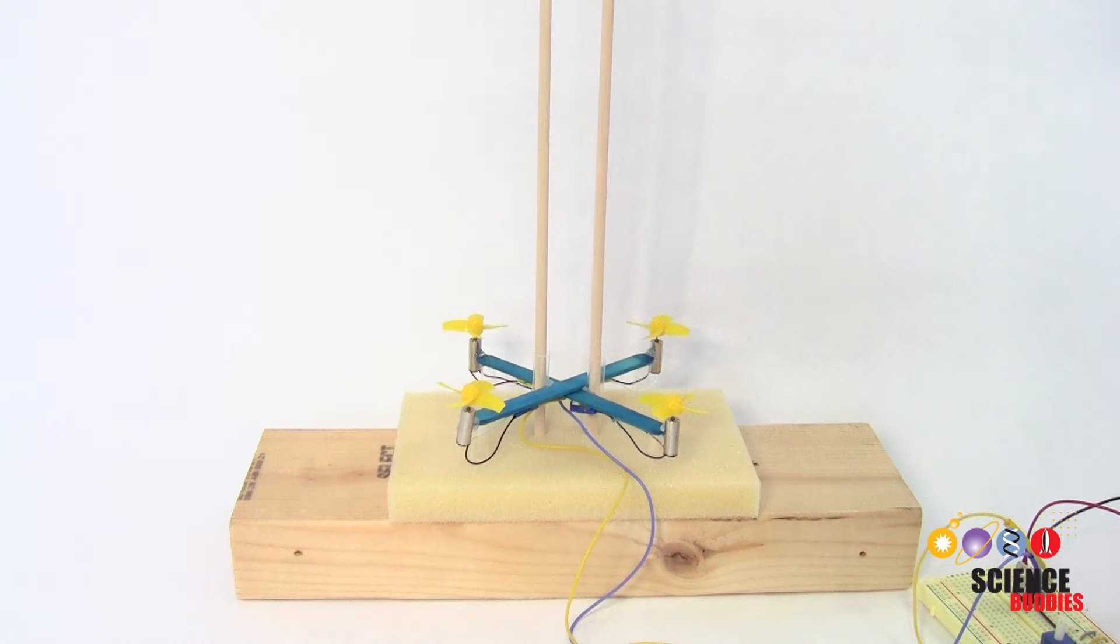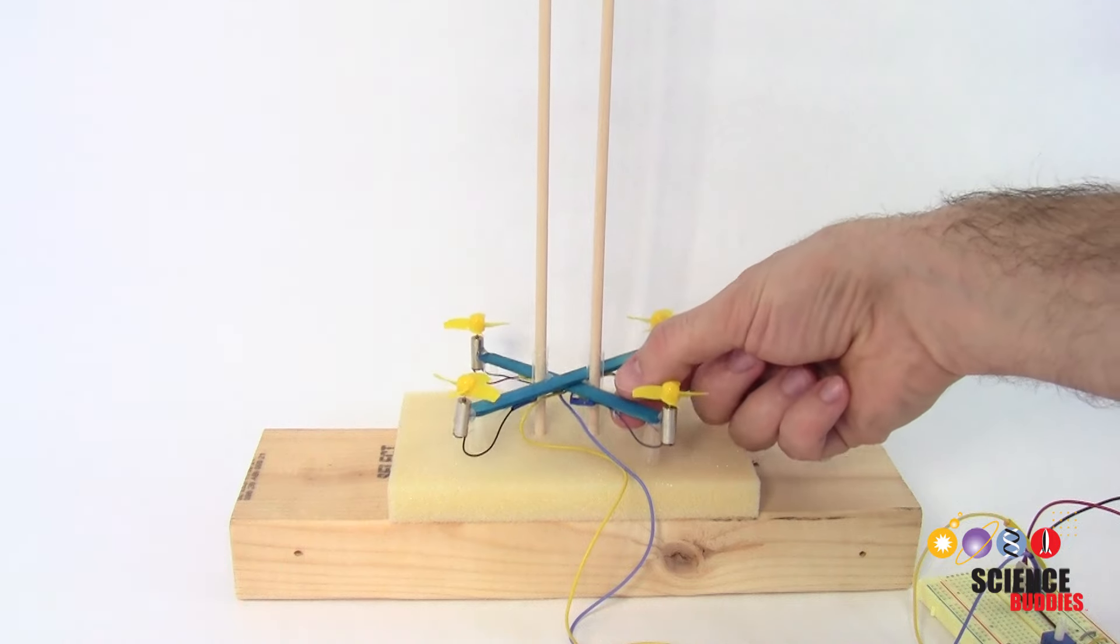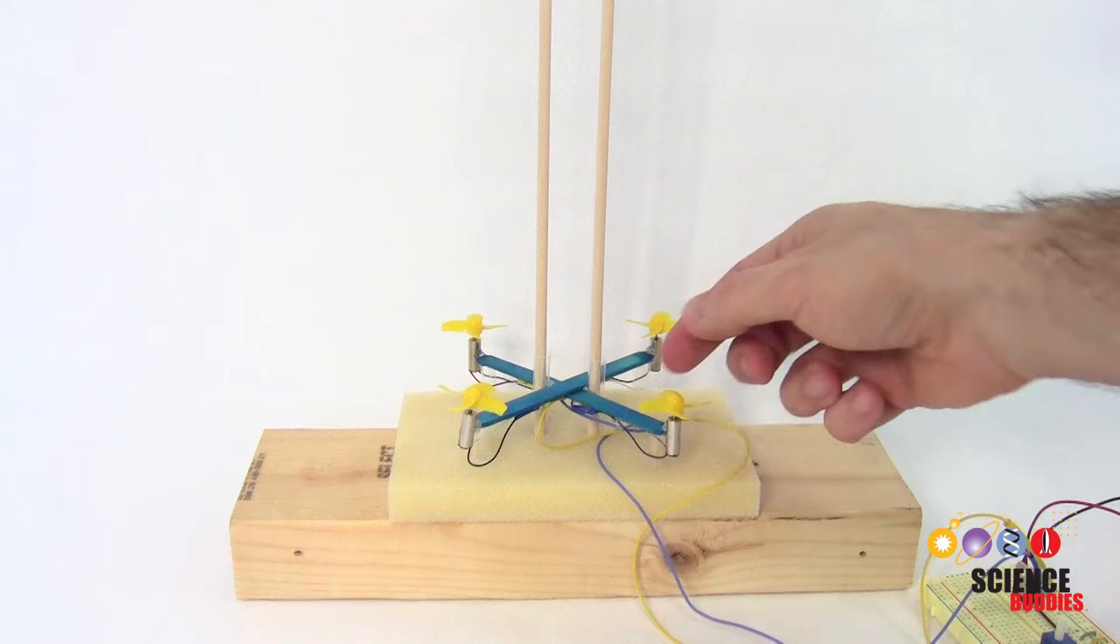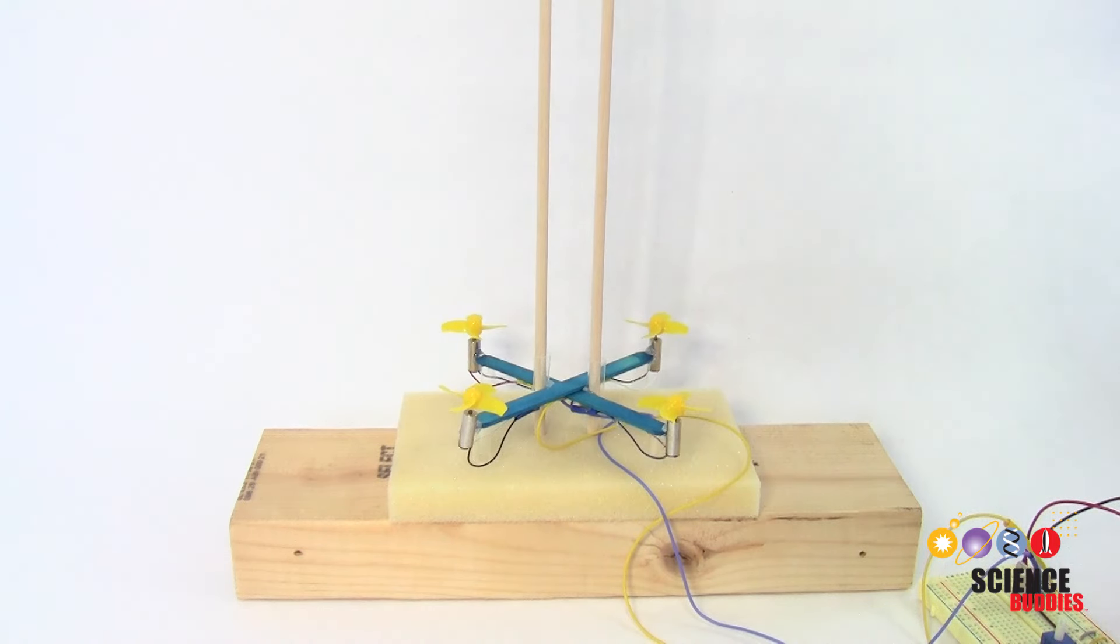For this project, we also recommend some improvements to your drone's guide pole. Two guide poles, threaded through two straws glued to the drone's frame, will prevent the drone from spinning. A piece of foam added to the bottom will also add some cushioning for any crash landings and prevent parts of the drone from breaking off.